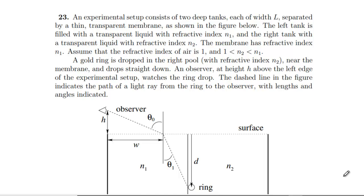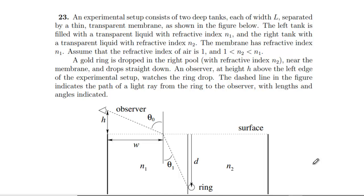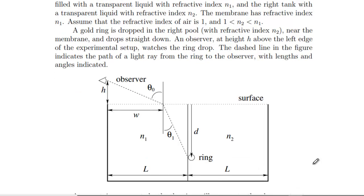Hello, this is the last question of the 2017 Oxford PAT. Question 23: we've got an experimental setup consisting of two deep tanks, each of width l, separated by a thin transparent membrane as shown below. The left tank is filled with refractive index n1, and the membrane is the same as n1. Assume the refractive index of air is one.